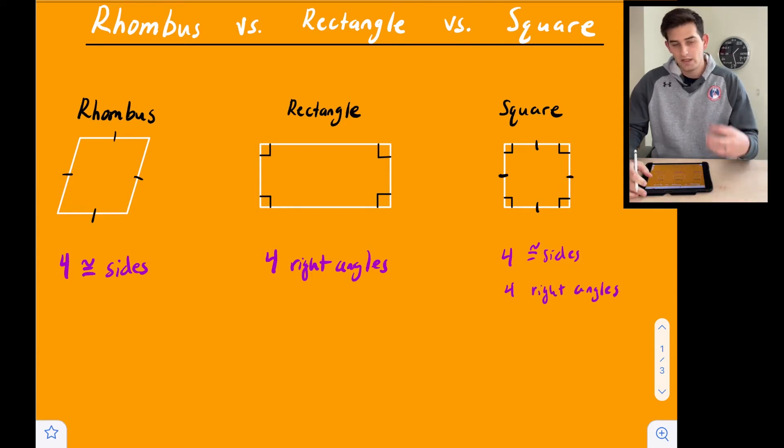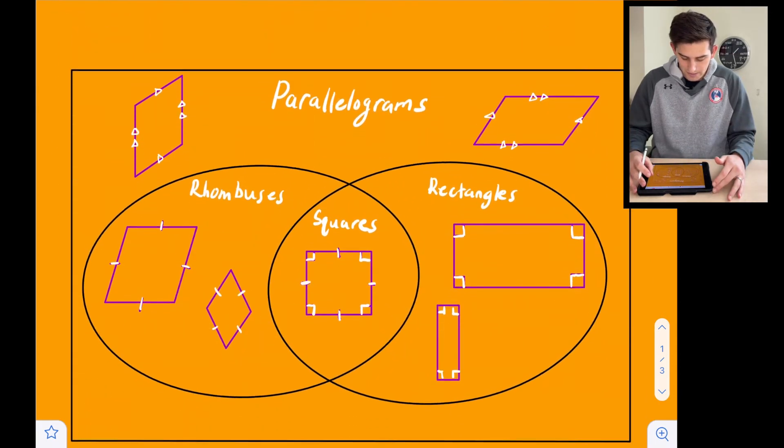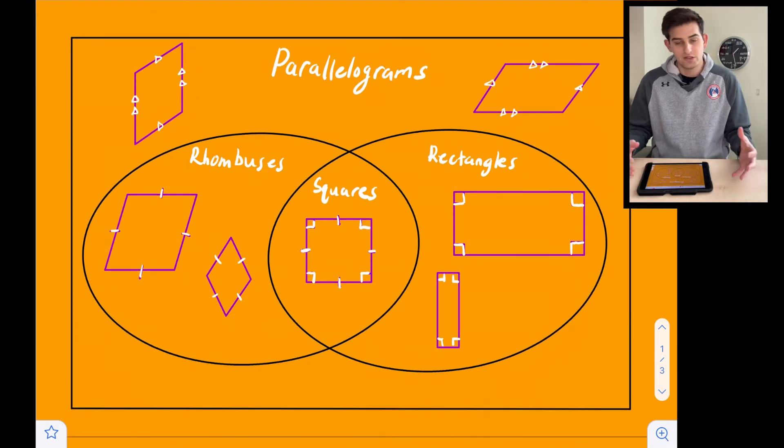Okay. So now we can see how these three shapes compare by looking at a Venn diagram. So that's what we'll look at here. So we said all three of these shapes are parallelograms. So that's our overarching, our big rectangle there on the outside. So we have a couple of examples of parallelograms, which remember the definition basically is just the opposite sides are parallel.